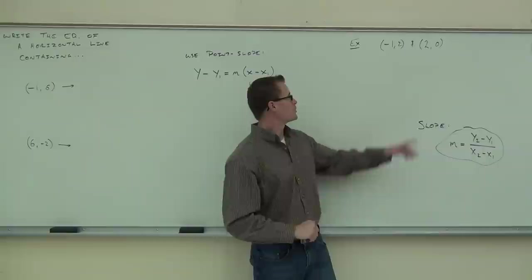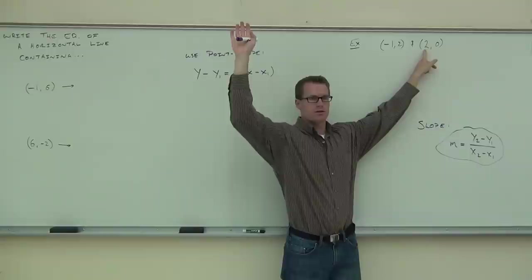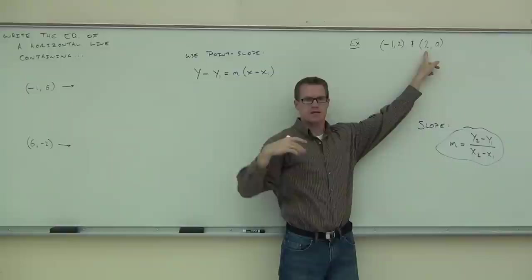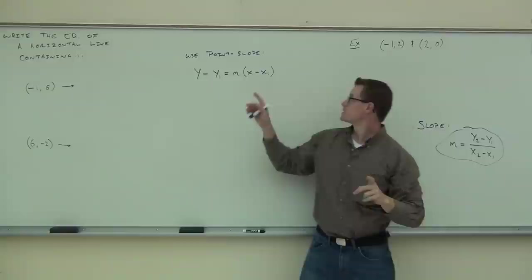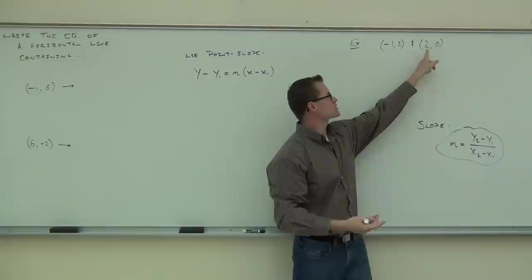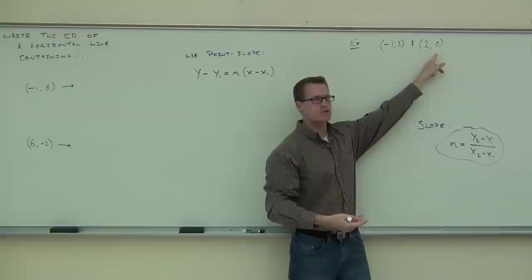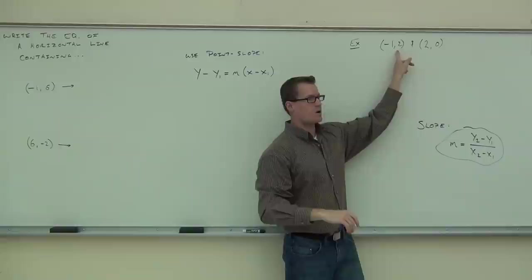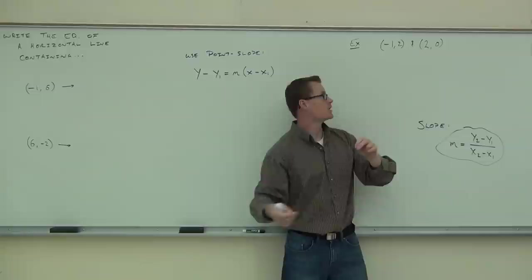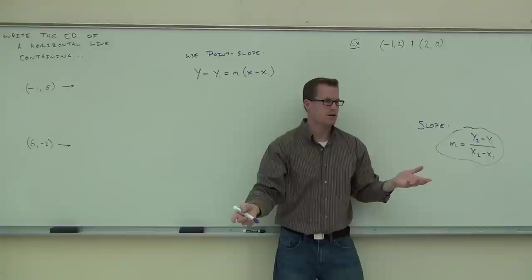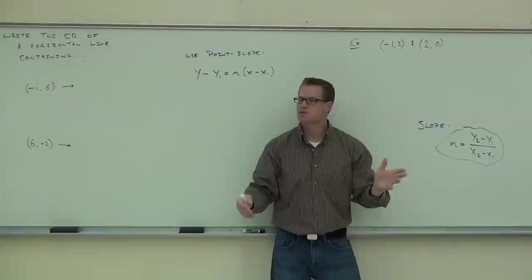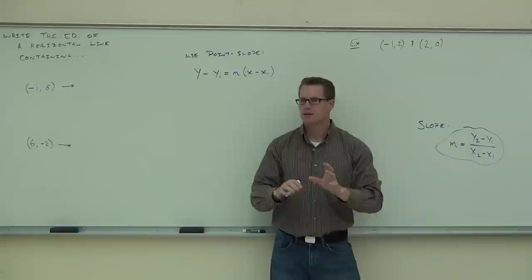By a show of hands, how many people picked this one to be x1? Anybody pick the other one to be x1? Are you going to get the same answers? Absolutely. Now which one might be easier? For the slope, it doesn't matter. For the point-slope formula, it'd probably be easiest to pick the one with the zeros as your x1. The reason is, if this is x1 and this is y1, notice how you're plugging in a zero — it makes things easier. If the other point is x1 and y1, you're plugging in two numbers you have to work with, and eventually you'd have to add two to both sides. If you pick the zero, you wouldn't have to do that.